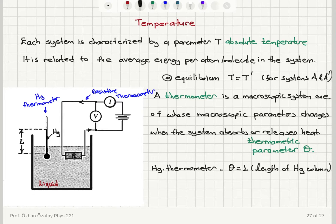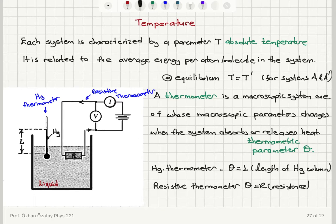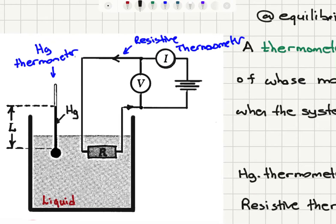In the case of the resistive thermometer, it is the resistance that changes with temperature. We place the mercury thermometer in the liquid, and when the system reaches equilibrium, the temperature of the liquid equals the temperature of the mercury thermometer. The temperature is related to the thermometric parameter theta, so we get a reading by looking at the length of the mercury column.